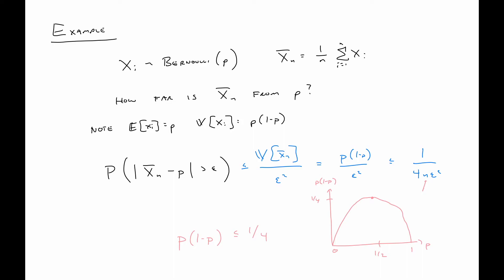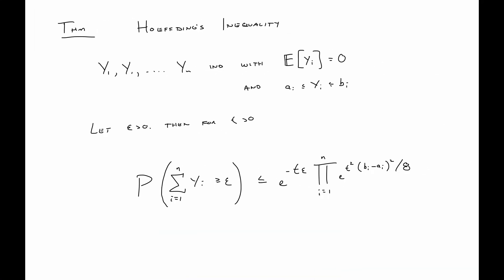How about another inequality? Here we have a very similar setup, but we have some more constraints. Now we're going to consider Y1 through Yn that are independent and we're going to say that they have mean zero, and in particular each individual one is bounded by some quantity ai and bi, where those a's and b's could be different depending on which Yi we're specifically talking about.